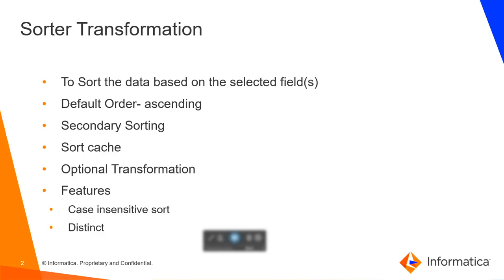You can use a sorted transformation in a mapping to sort data in ascending or descending order according to a specified sort condition. When there are multiple fields specified as sort conditions, the successive fields are used for secondary sorting. By default, the data is sorted in ascending order and it can be changed for each sort field that you choose.